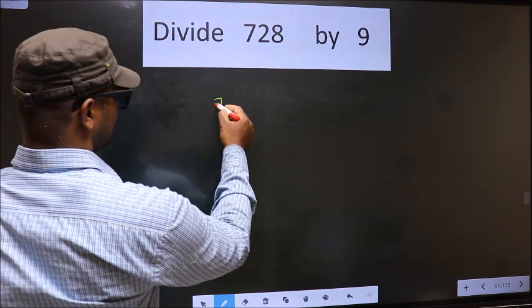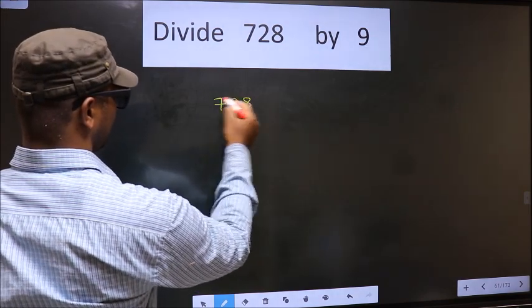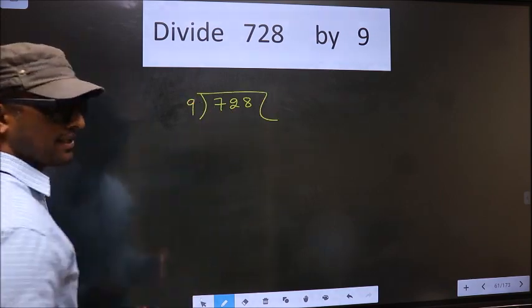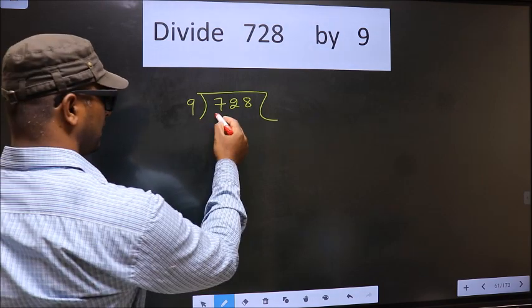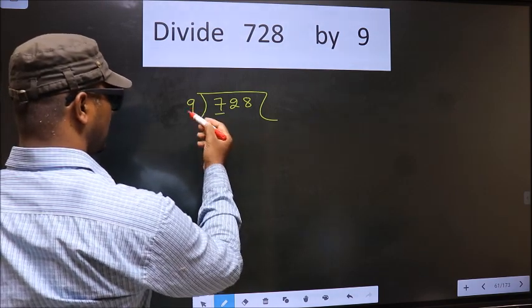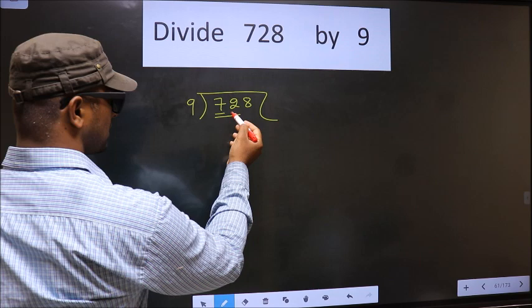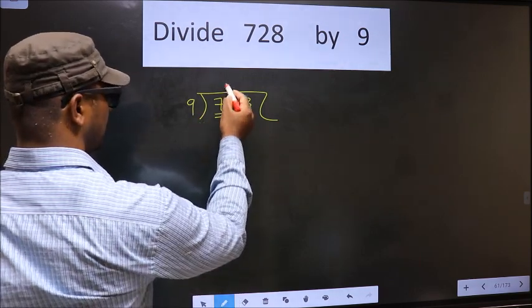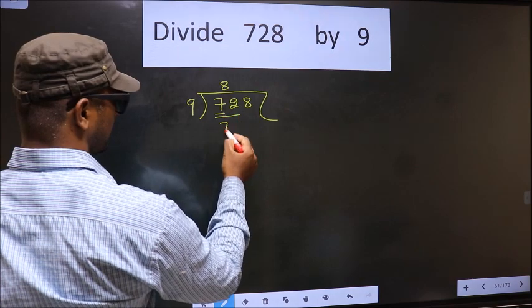That is 728, 9 here. Now, here we have 7. 7 is smaller than 9, so we take 2 numbers. That is 72. When do we get 72 in the 9 table? 9 times 8 is 72.